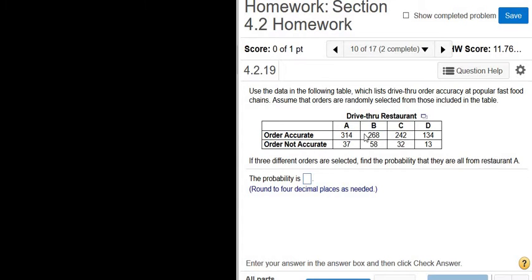So we have a table and it's orders through a drive-thru restaurant. If three different orders are selected, find the probability that they are all from restaurant A.